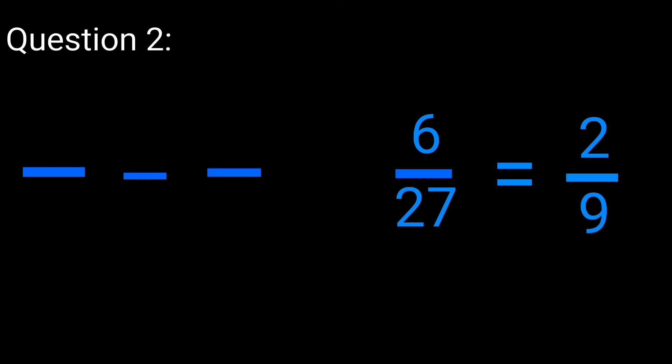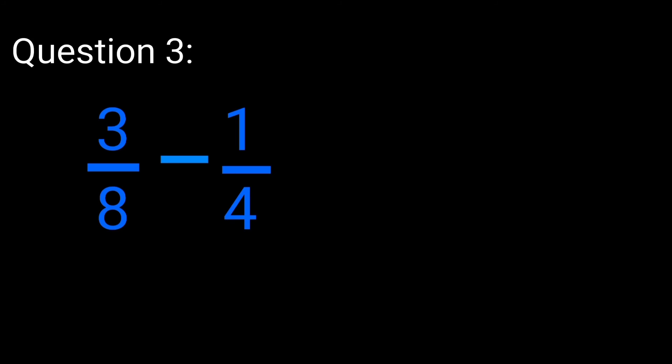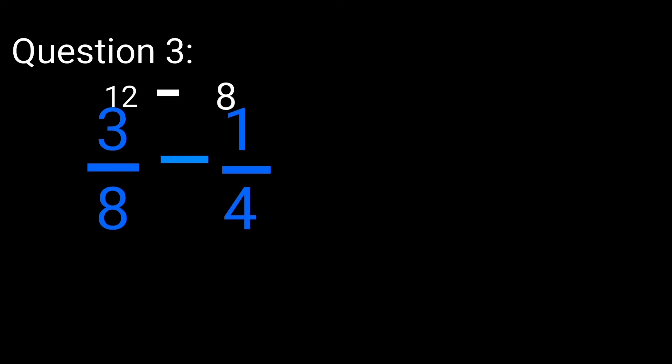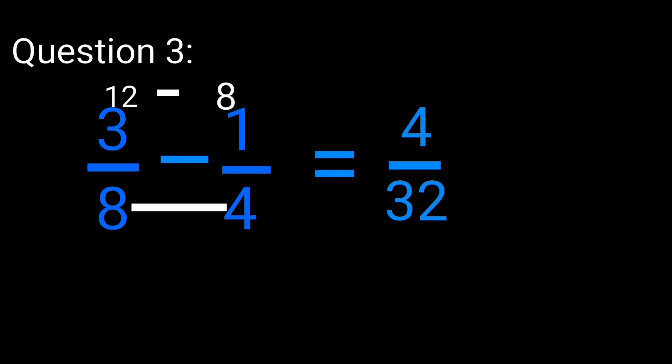Remember you have to start multiplying from the top left. Now question number 3 says 3 over 8 minus 1 over 4. Following the same step used to solve question number 2, you are going to get 3 times 4 — that is top left multiplied by down right. 3 times 4 is going to give you 12, while 1 times 8 is going to give you 8. Now multiplying the two denominators, that is 8 times 4, which is going to give you 32. So the answer is 12 minus 8 is 4, over 32.